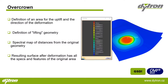Another selected element from this module is the feature called Over Crown, which represents the function of general lifting — sometimes called bomeering. This concerns a definition of an area for an uplift and the direction of the deformation itself. It's a definition of lifting geometry, and there's an option of a spectral map of distances which you can see from the original geometry. Once more, the resulting surface after deformation has all of the specs and features of the original area we input.